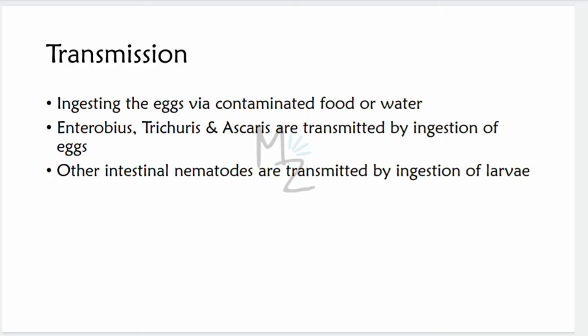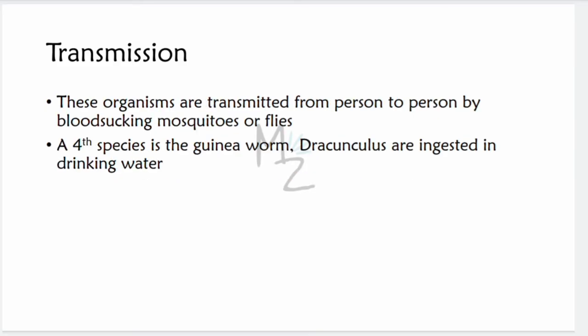Regarding transmission: Enterobius, Trichuris, and Ascaris are transmitted by ingestion of eggs via contaminated food or water. Other intestinal nematodes are transmitted by ingestion of larvae. Filarial worms are transmitted from person to person by blood-sucking mosquitoes or flies. The guinea worm, Dracunculus, is ingested in drinking water.